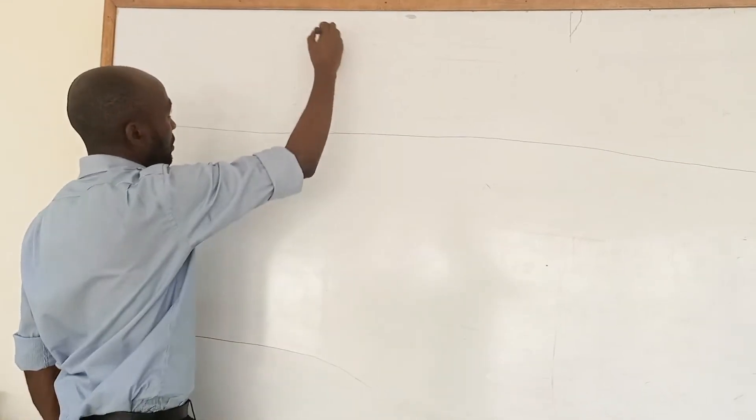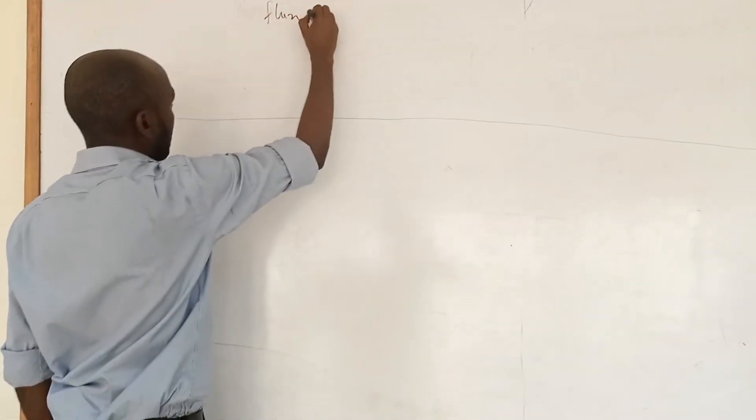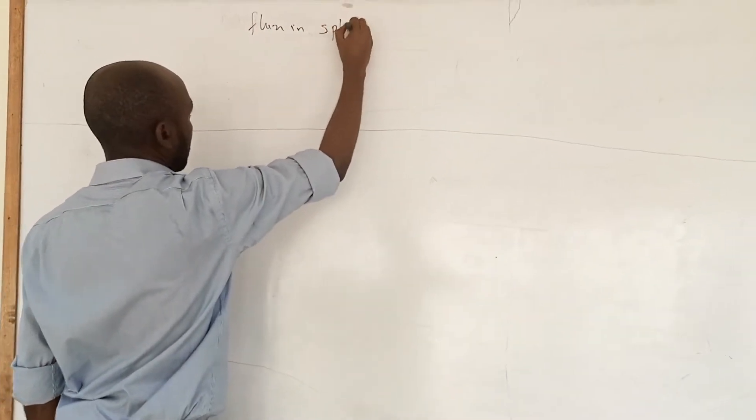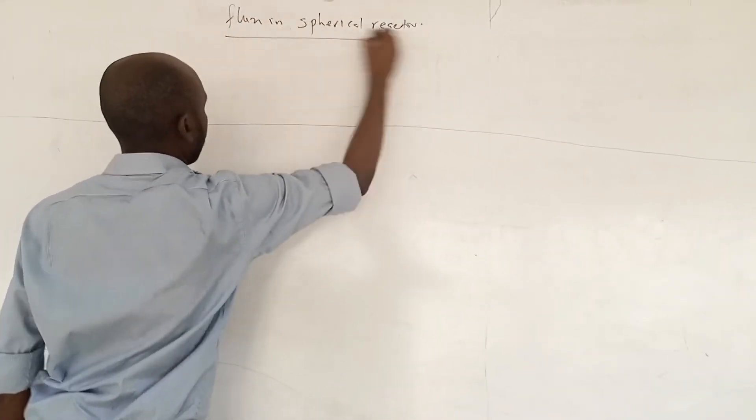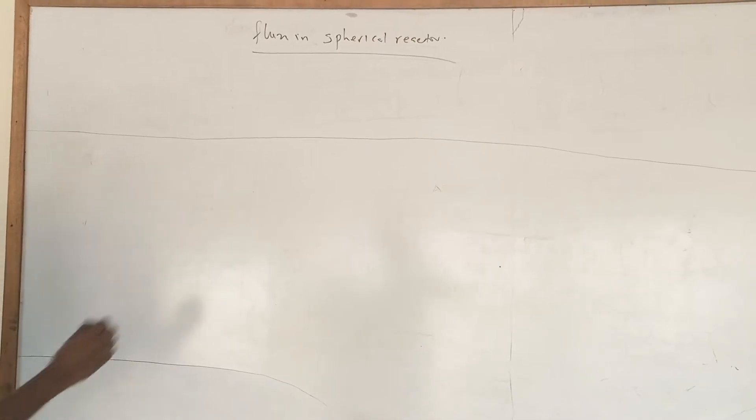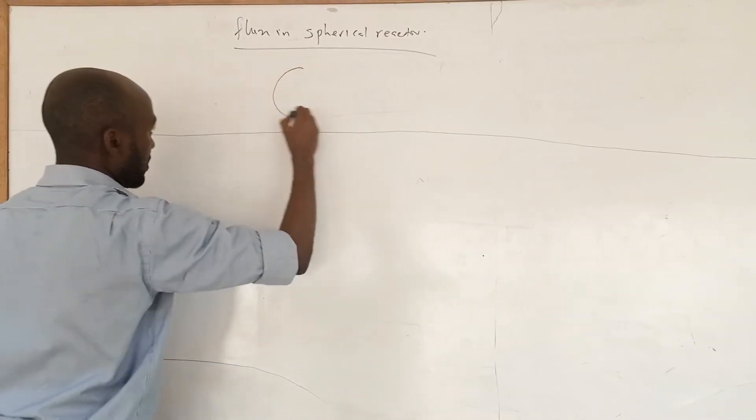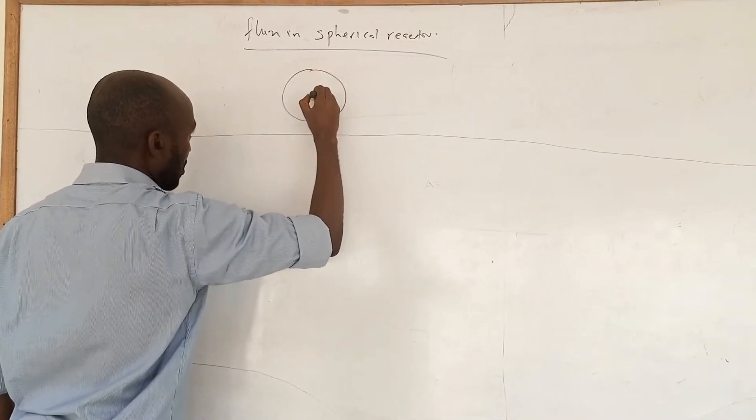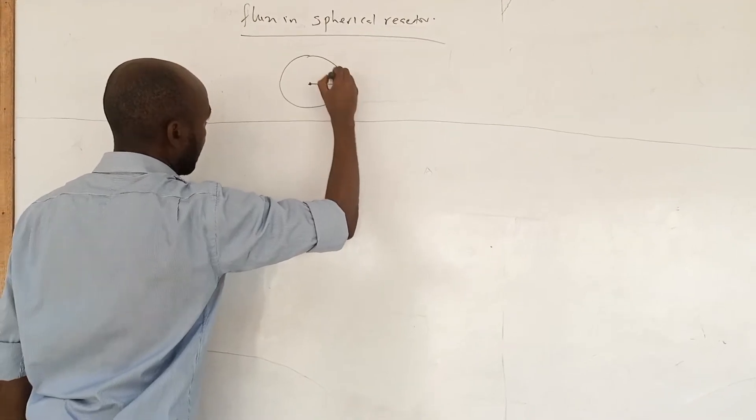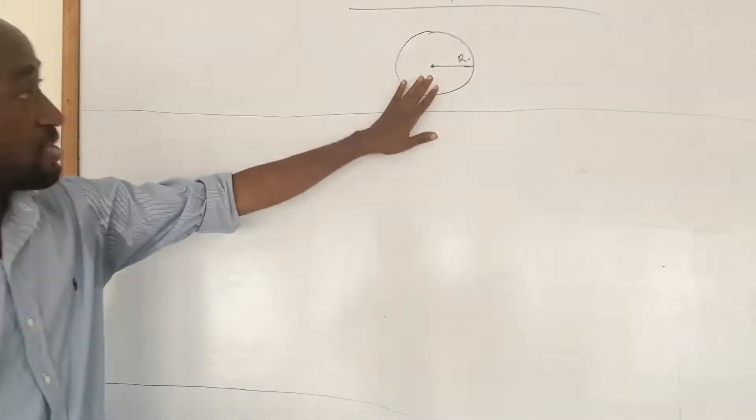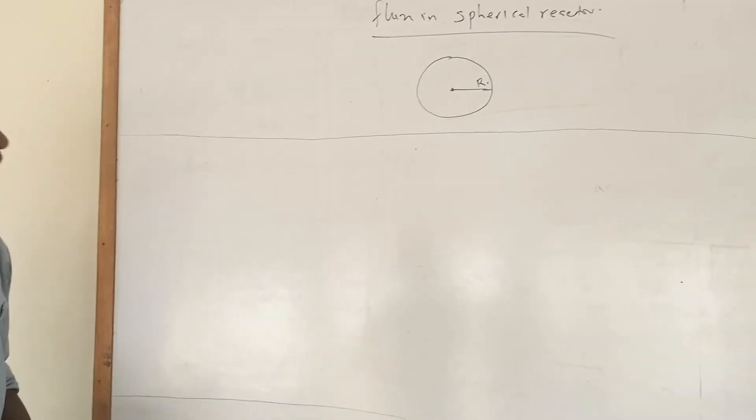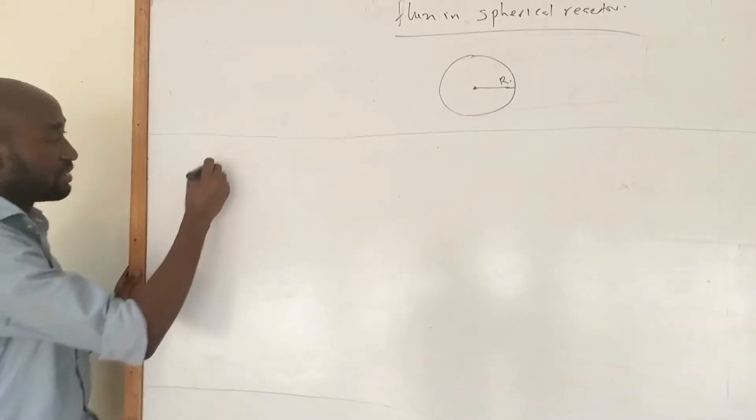Neutron flux in spherical reactor. You know that a sphere is always like this at the center R. Now we want to calculate the flux in the spherical reactor, this is the sphere. We assume this is the sphere.